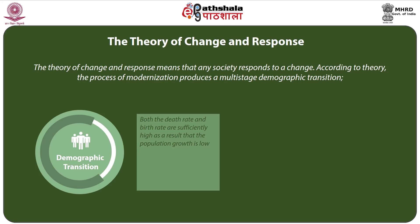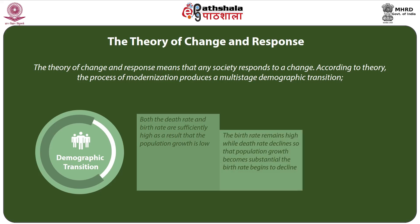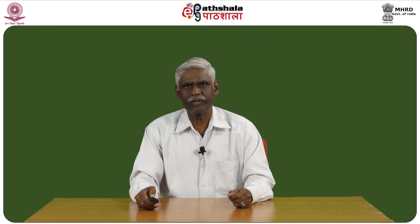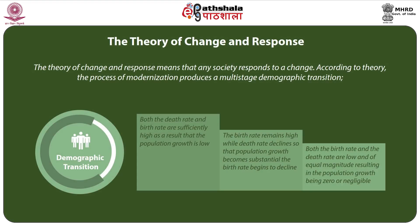In the first stage, both the death rate and birth rate are sufficiently high, resulting in low population growth. This is followed by a stage where the birth rate remains high while the death rate declines, so population growth becomes substantial. The birth rate then begins to decline even as the death rate continues to fall, and finally both rates are low and equal, resulting in zero or negligible population growth.